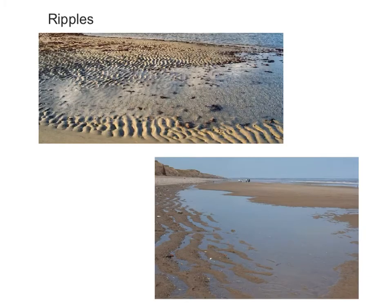Let's begin with ripples. These are features formed as the tide goes out and the waves, as they are retreating, create patterns in the sand. These are the ripples that you can see here. They're only visible on sandy beaches and only visible at low tide. At high tide when the tide comes back in, they are covered up.